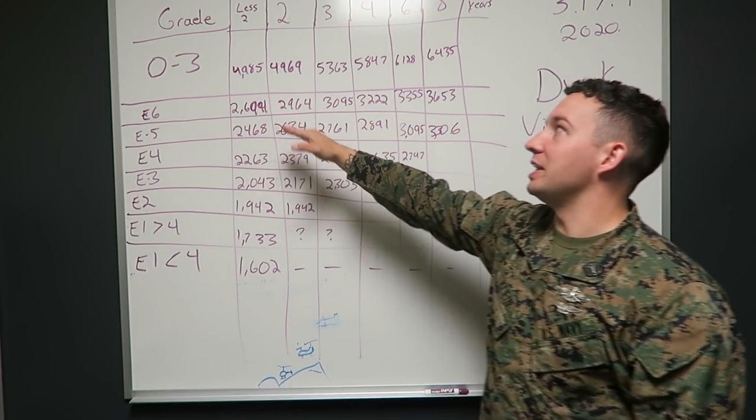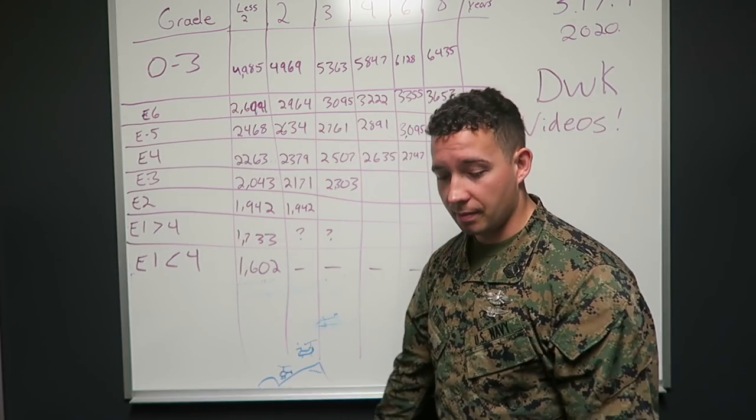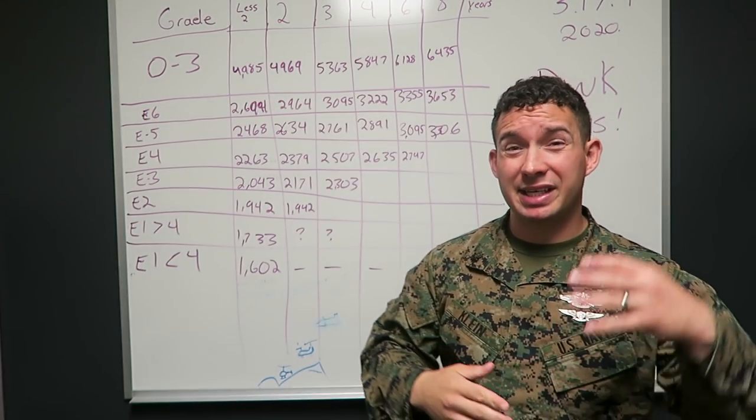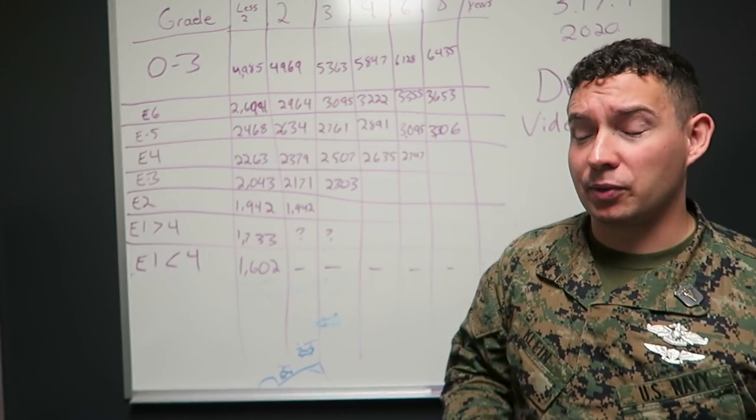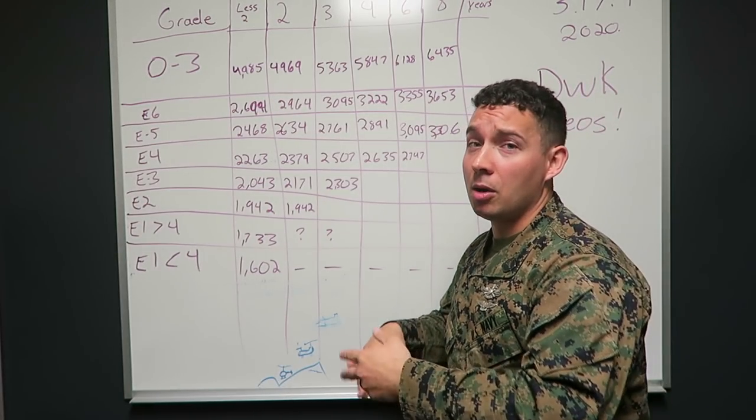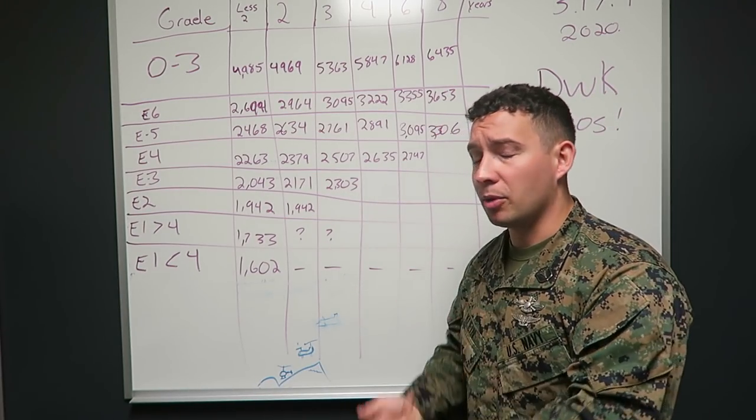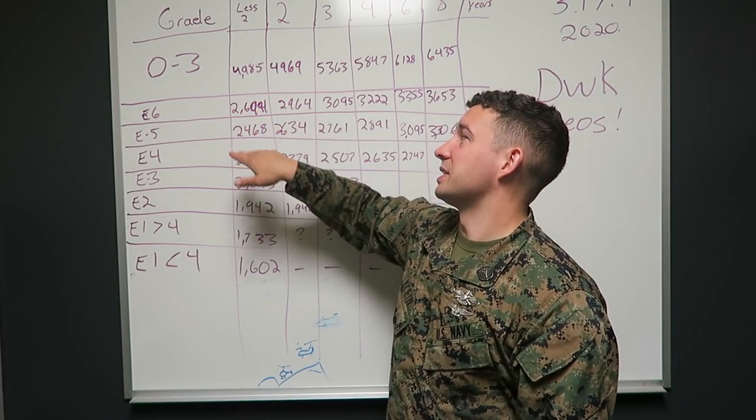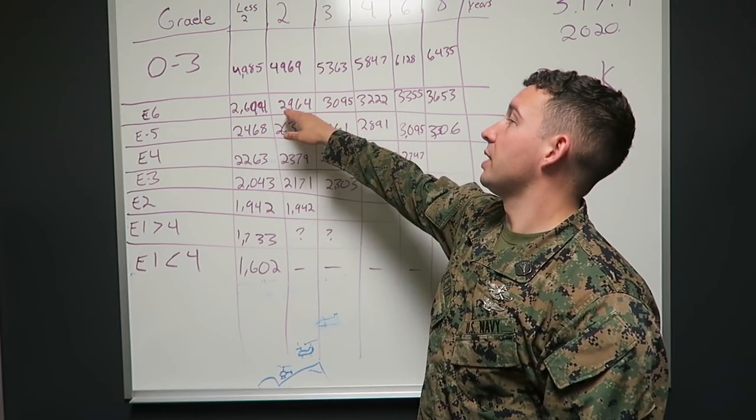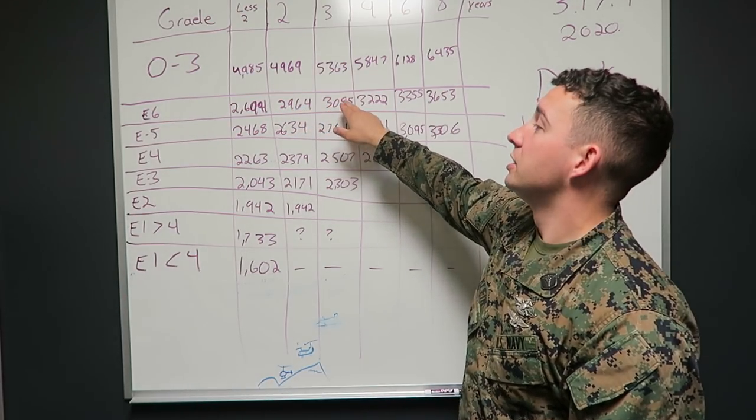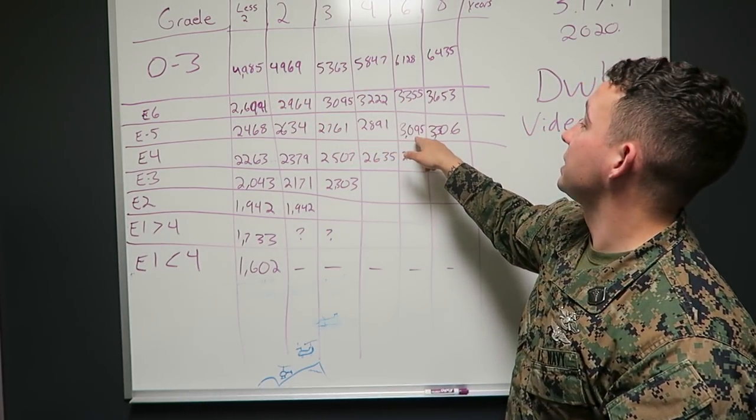Now E6, I don't get how E6 less than two years is possible, but apparently it's a thing. Maybe you had some sort of fancy degree that they didn't want to make commissioned, and they're just going to make you enlist and buff you up in rank because they do that for musicians, morticians. If you guys know, Corpsman may break off into 33 specialties. Morticians can come in as an E6. So less than two years E6, $2,694. Two years, $2,964. Three years, $3,095.